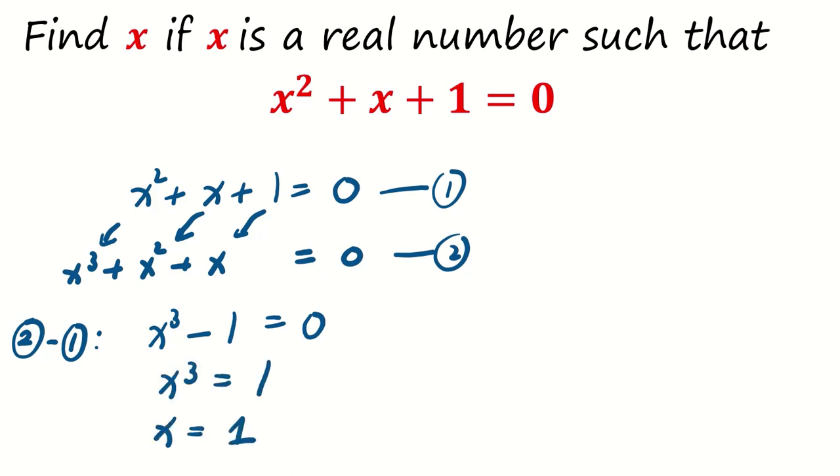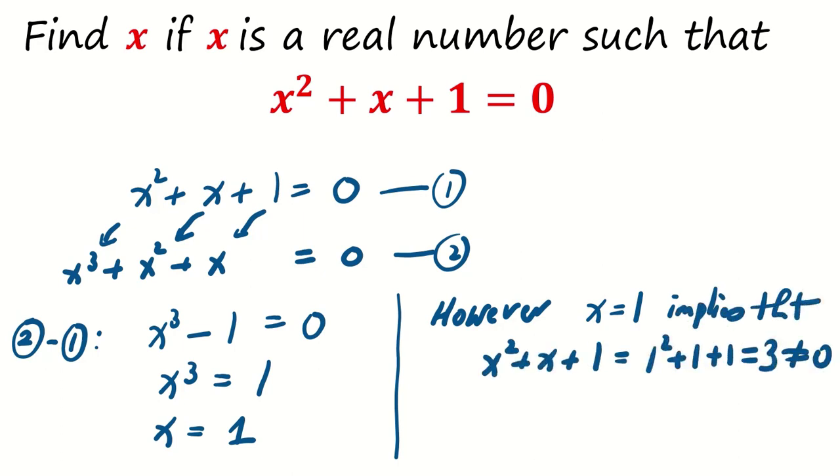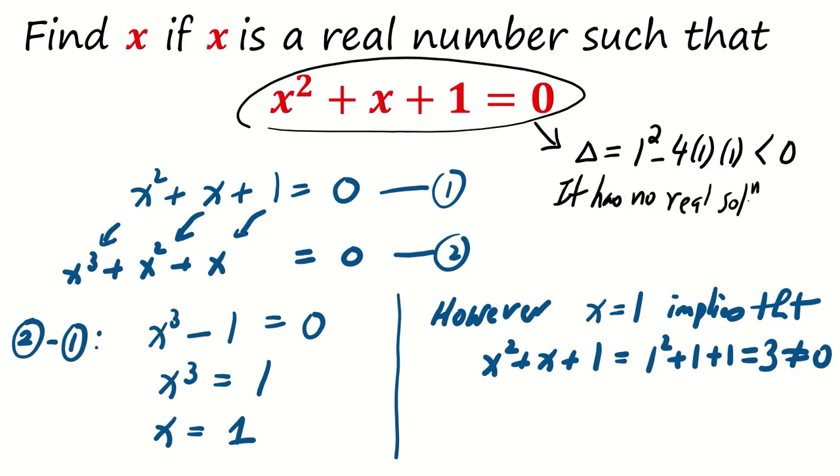However, x = 1 implies that x^2 + x + 1 = 3, not equal to 0. Why did this happen? Partly because the equation x^2 + x + 1 = 0 does not have any real solution to begin with.